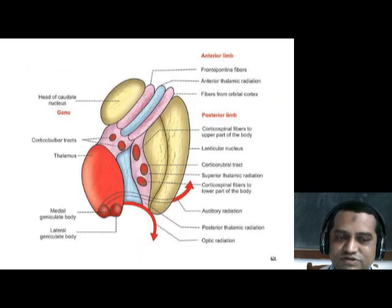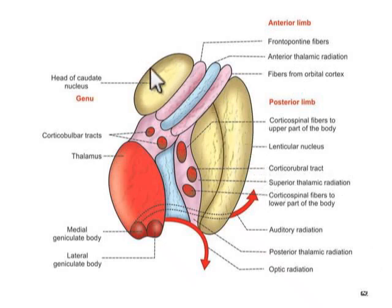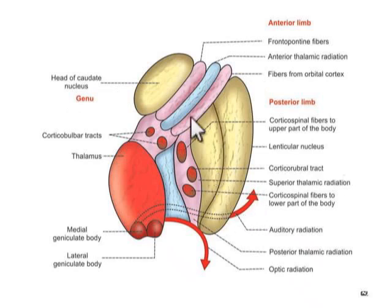The anterior group of nuclei are also known as the preoptic group of nuclei. Here you can see in this diagram the red-colored nuclei are the anterior group. They include mainly the preoptic nucleus, paraventricular nucleus, anterior nucleus, supraoptic nucleus, and suprachiasmatic nucleus.